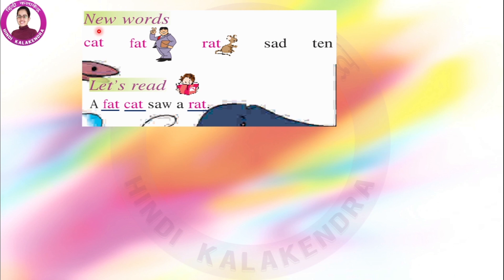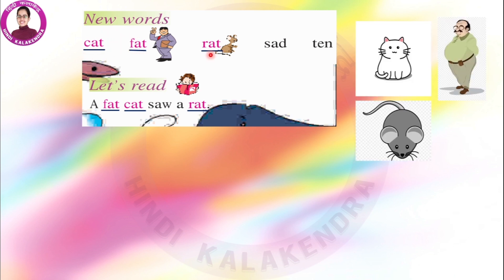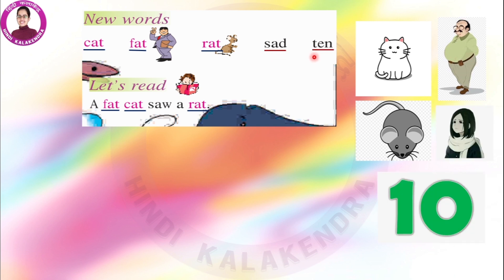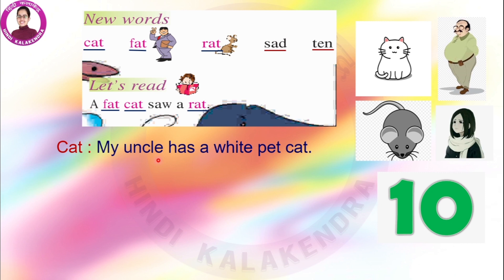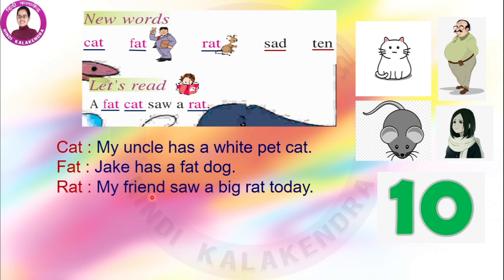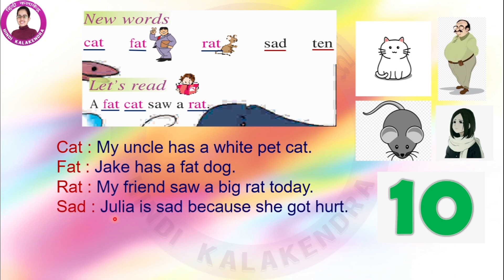Let's learn some new words: cat, fat, rat, sad and ten. Now let's make some sentences so that we can understand them better. A fat cat saw a rat. My uncle has a white pet cat. Jake has a fat dog. My friend saw a big rat today. Julia is sad because she got hurt. I have ten hats at home.